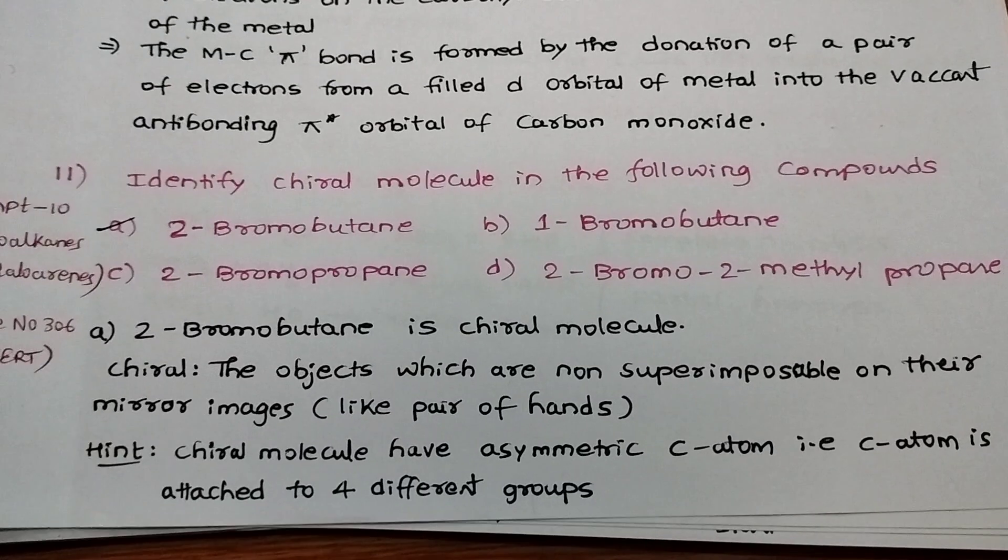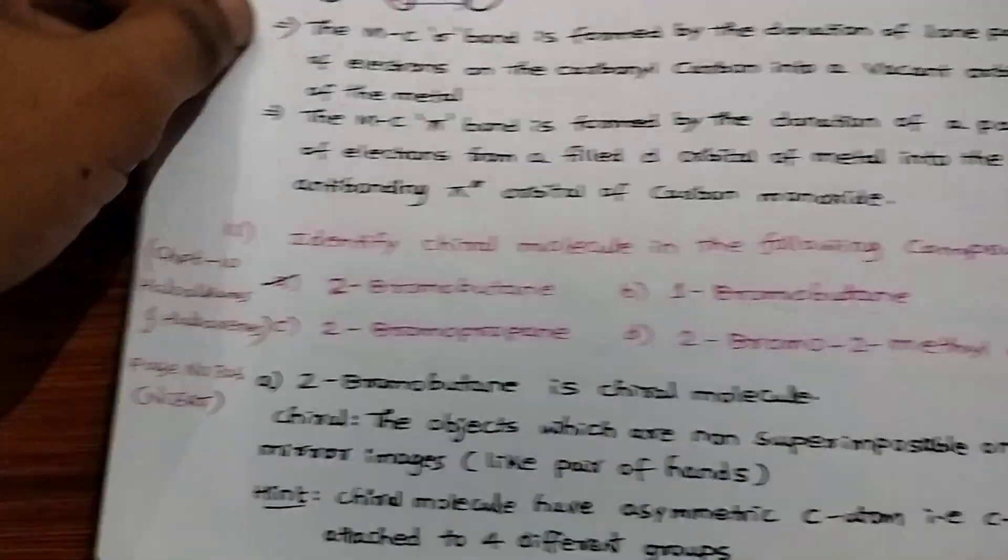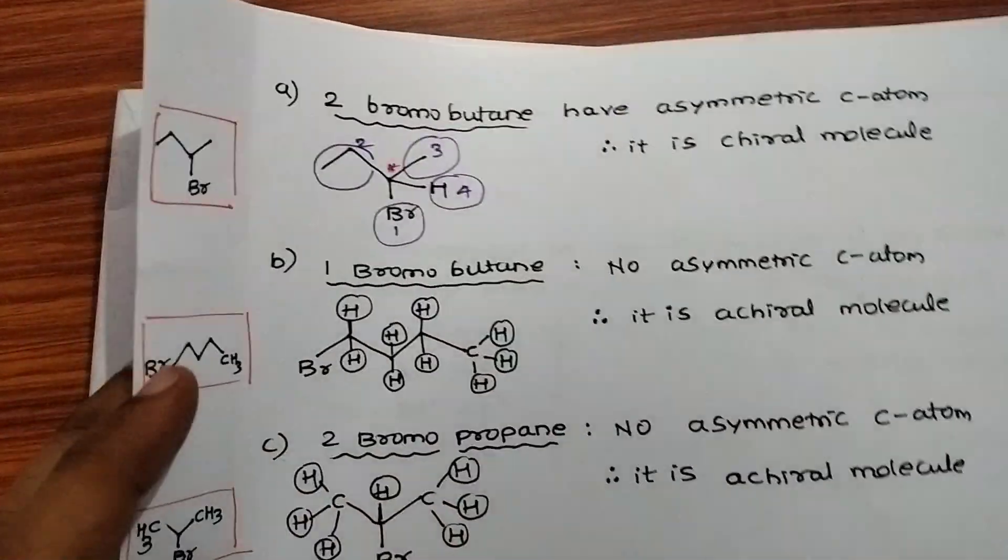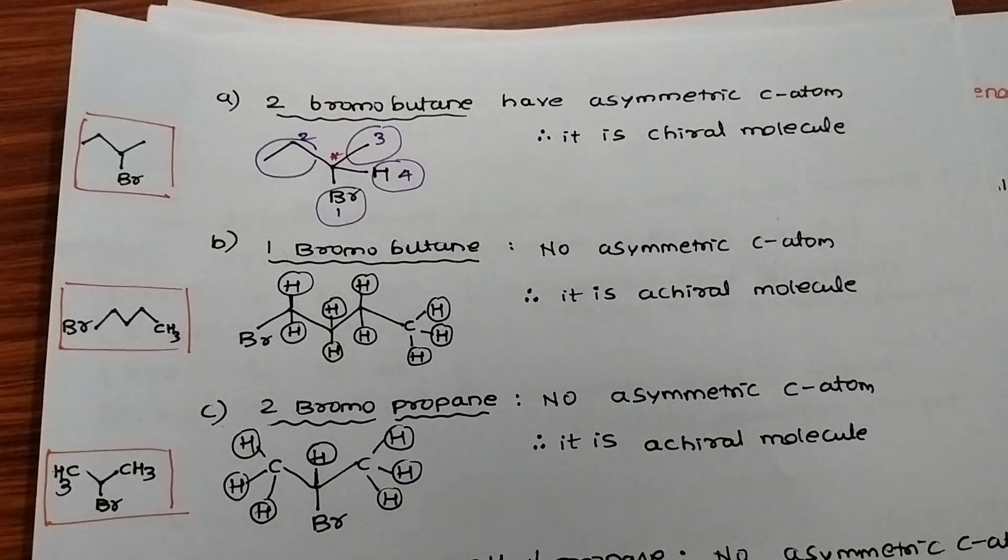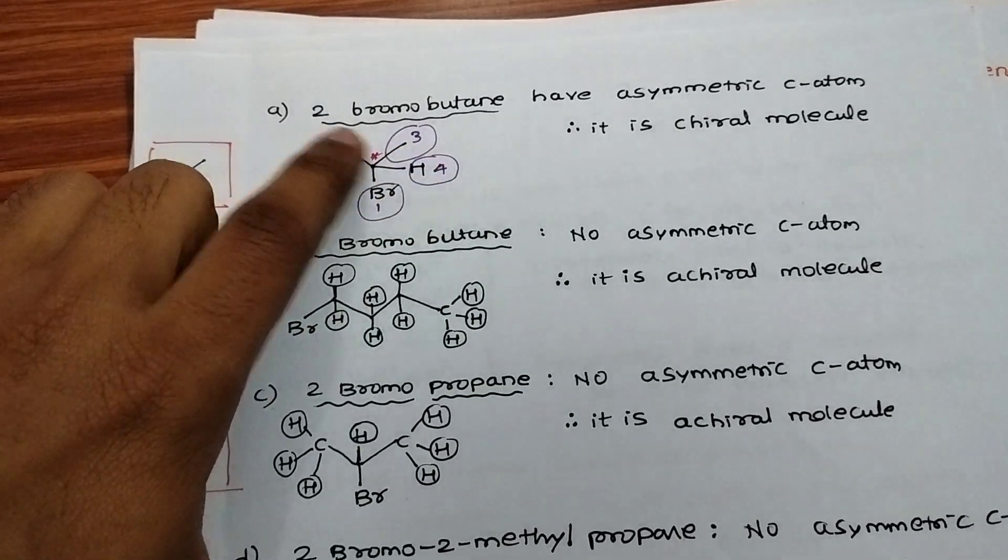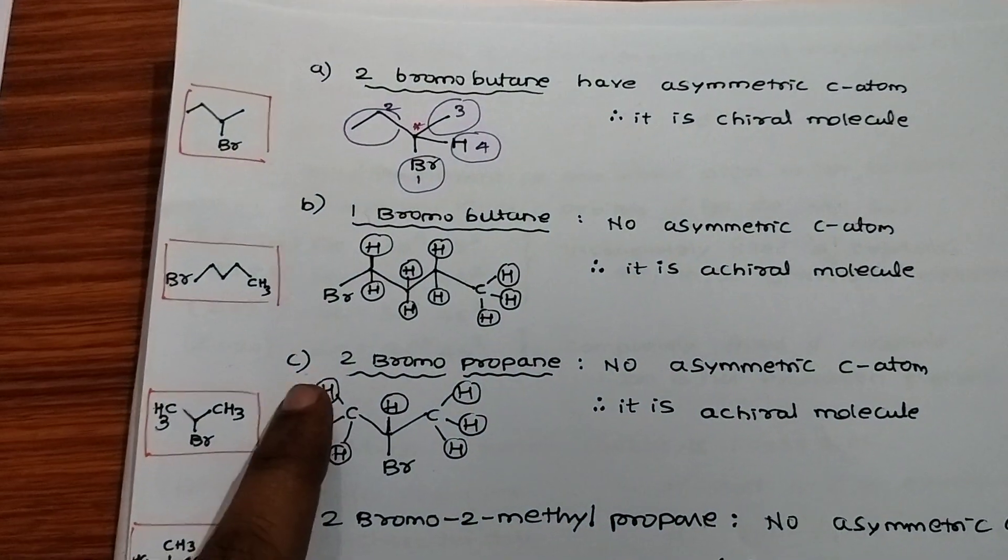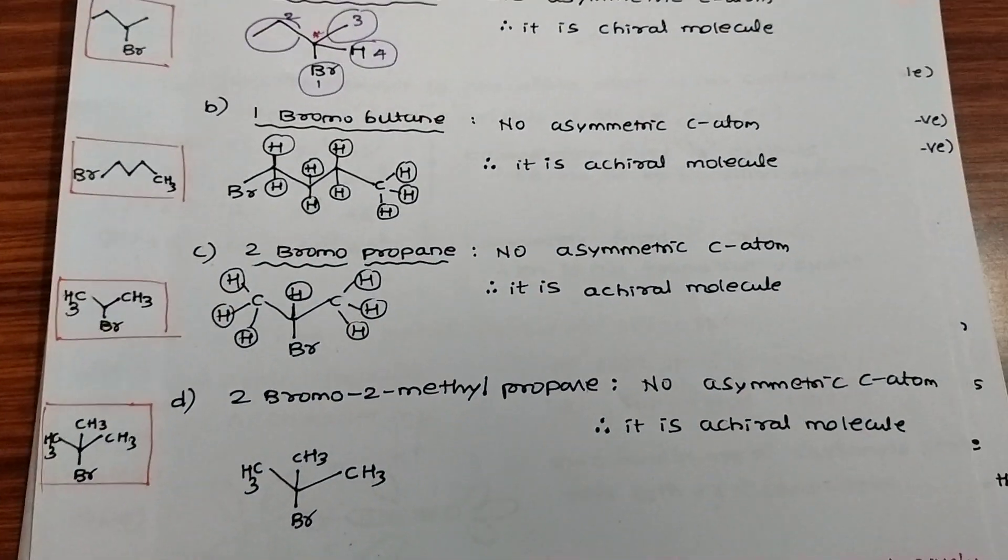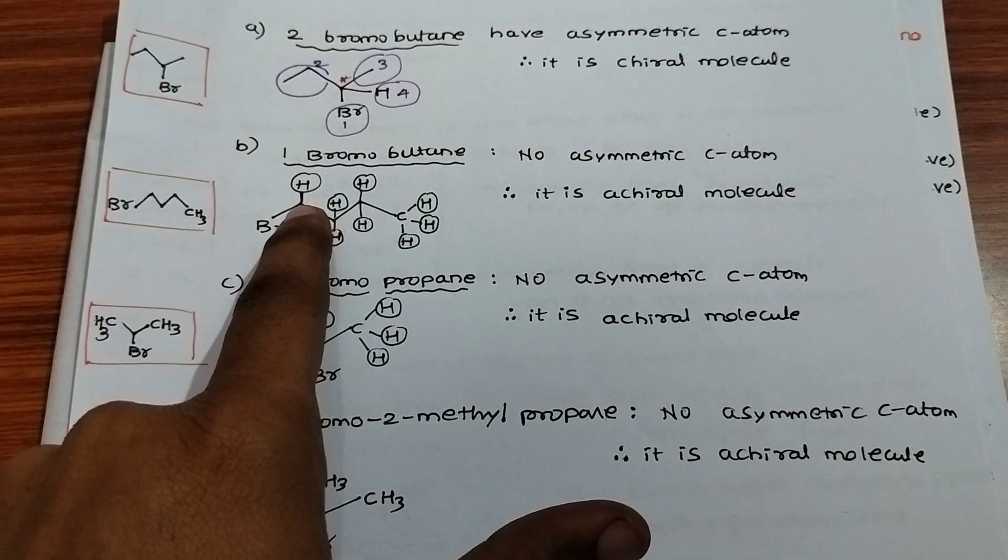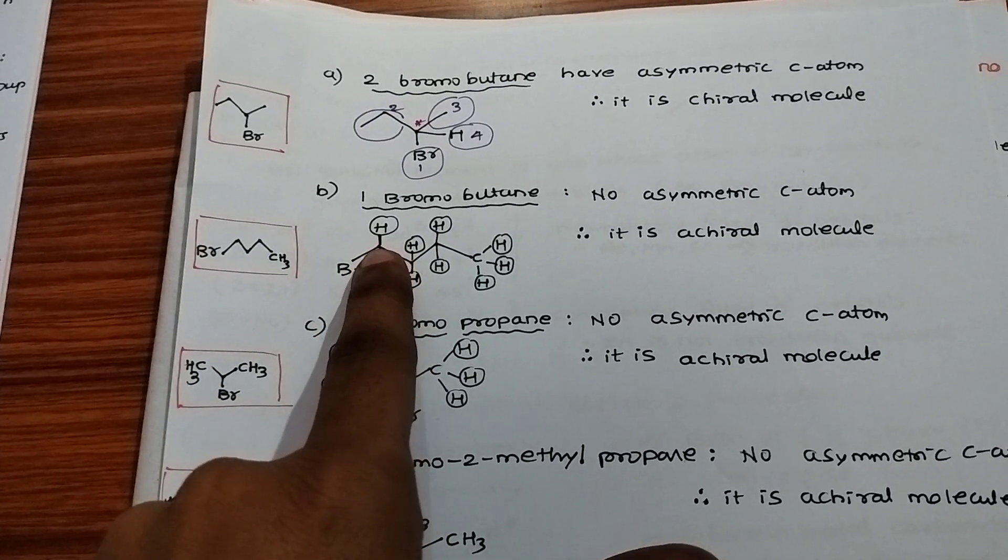Asymmetric carbon atom is a carbon tetrahedrally attached to four different groups. For 2-bromobutane, there is an asymmetric carbon atom because it is bonded to four different groups, therefore it is a chiral molecule. For remaining options B, C, and D, each carbon is not bonded to four different groups.